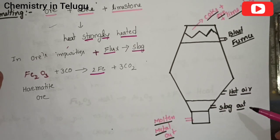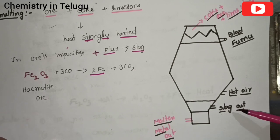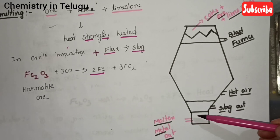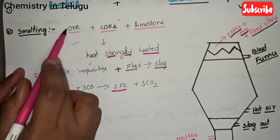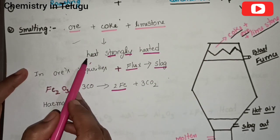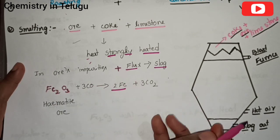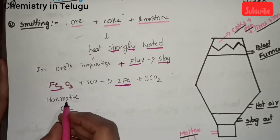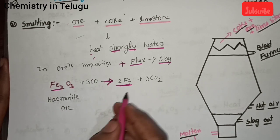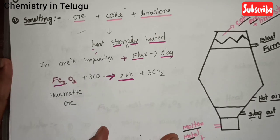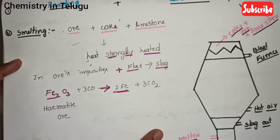We use slag to collect impurities from the process. The pure metal is collected in the molten state. The ore, coke, and limestone are added; strong heat is applied. The reaction involves hematite (Fe2O3) reacting with 3CO to produce iron and carbon dioxide — a simple smelting reaction.